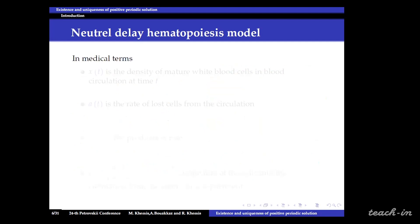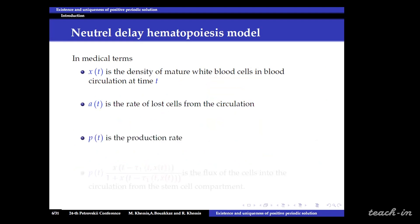In medical terms, x(t) is the density of mature white blood cells in blood circulation at time t. a(t) is the rate of lost cells from the circulation, p(t) is the production rate. This term is the flux of the cells into the circulation from the stem cell compartment.